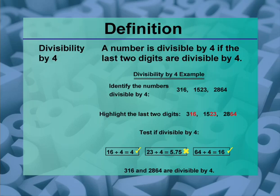Divisibility by 4. A number is divisible by 4 if the last two digits are divisible by 4.